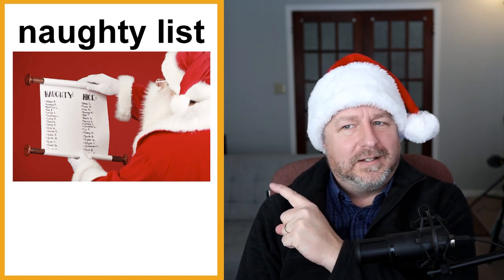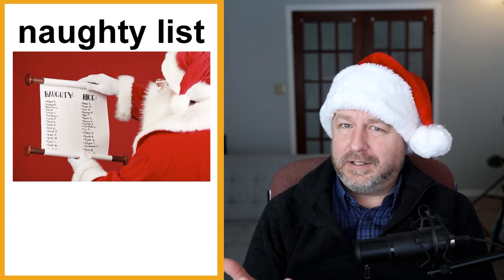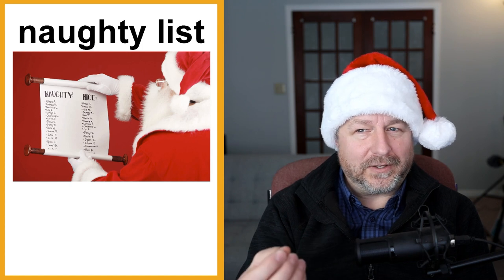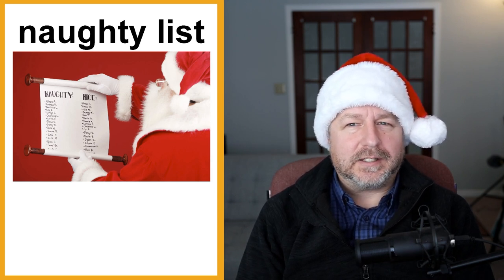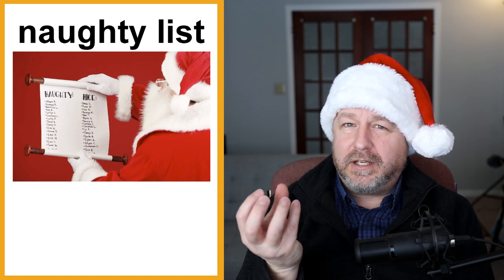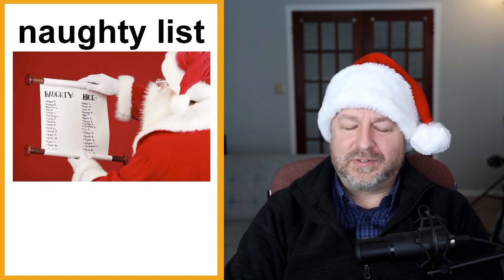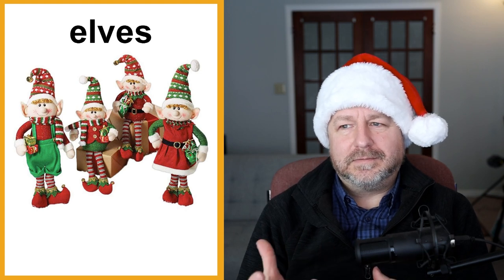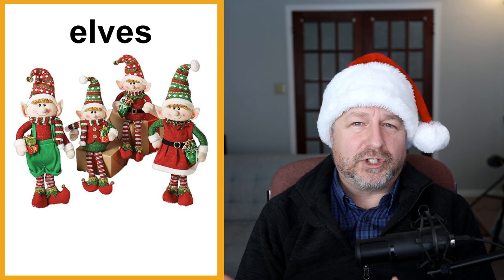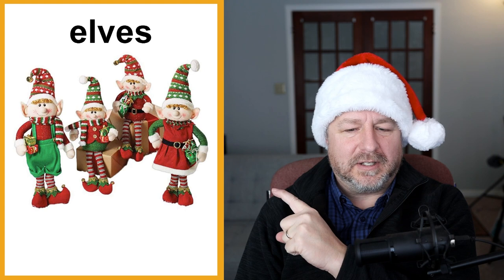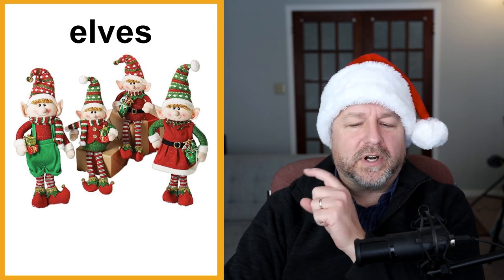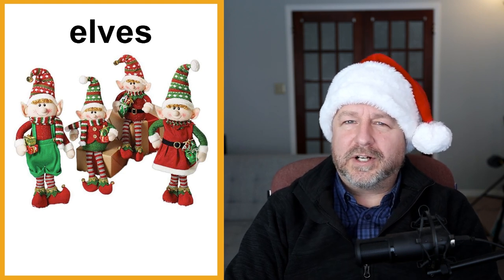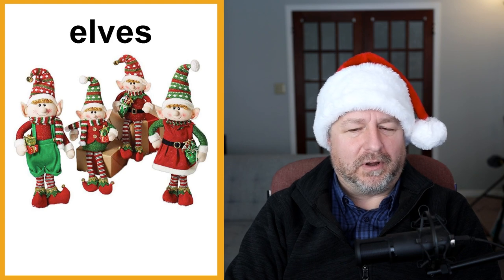Santa apparently has a list of names — a naughty list and a nice list. One Christmas song says Santa is watching to see if you're naughty or nice all year. If you're on the naughty list it means you've been bad and you probably won't get a nice gift. In fact, the story is if you're naughty you'll get a lump of coal. If you're on the nice list you'll get something nice. Santa has a workshop where he makes toys, and the elves are little people who help Santa make toys.